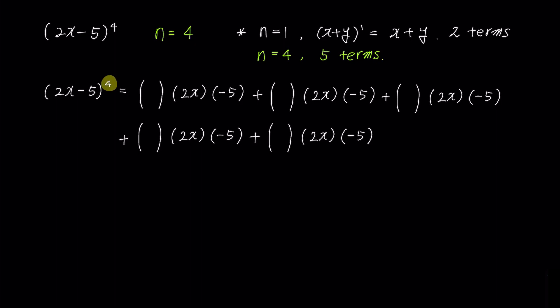Since the left term has an exponent of 4, we'll fill in the top line of the combination with all 4s. Then, as we saw in the previous video, we'll fill in the exponent of the first term, 2x, from 4 to 0 in reverse order: 4, 3, 2, 1, and 0. We'll fill in the second exponent value and the combination bottom value identically in reverse order: 4, 4, 3, 3, 2, 2, 1, 1, 0, and 0.